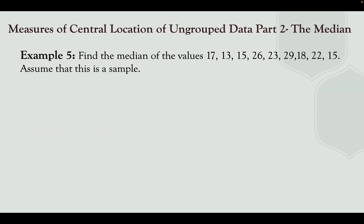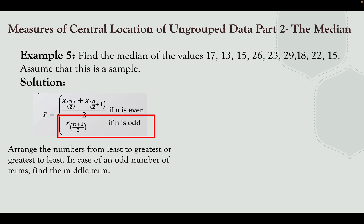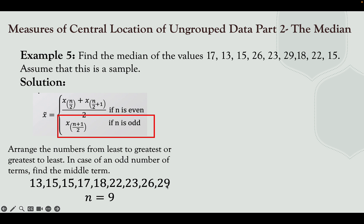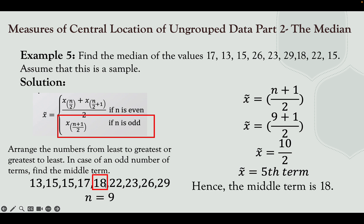Last example: find the median of the values 17, 13, 15, 26, 23, 29, 18, 22, 15. Assume this is a sample. We have 9 data, which is odd. Arrange from least to greatest: 13, 15, 15, 17, 18, 22, 23, 26, 29. With n = 9, median = x sub (9+1)/2 = x sub 5. The 5th term is 18. Hence, the middle term is 18.